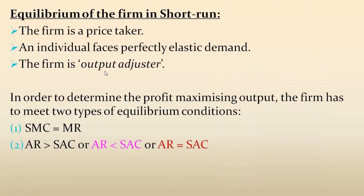Third point: the firm is an output adjuster. This means it can adjust the output — it can make slight variations in production so that the price is not affected.